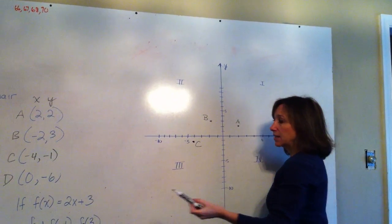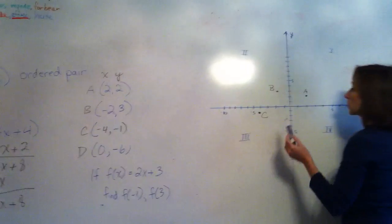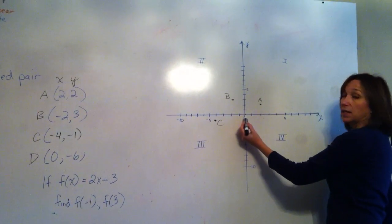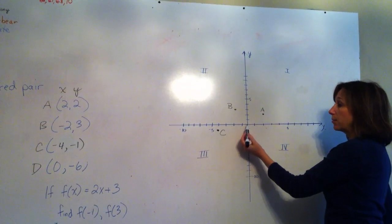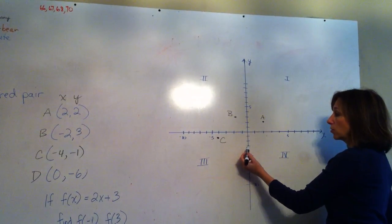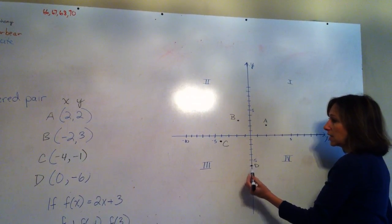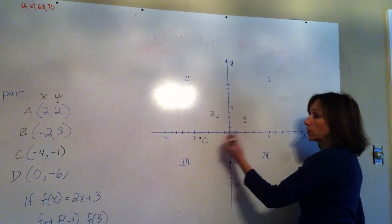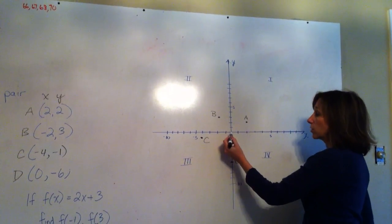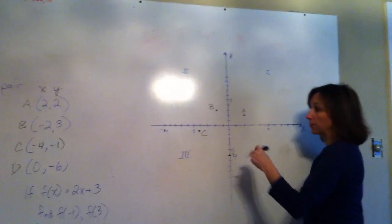And our final one is D, which is (0, -6). So we put our point at 0. It's 0, so we don't move on the x-axis. We just go down 6: 1, 2, 3, 4, 5, 6. And that would be D. You notice that since the x-coordinate is 0, we're not going to go left or right. We're only going to go up or down. And this one's down.